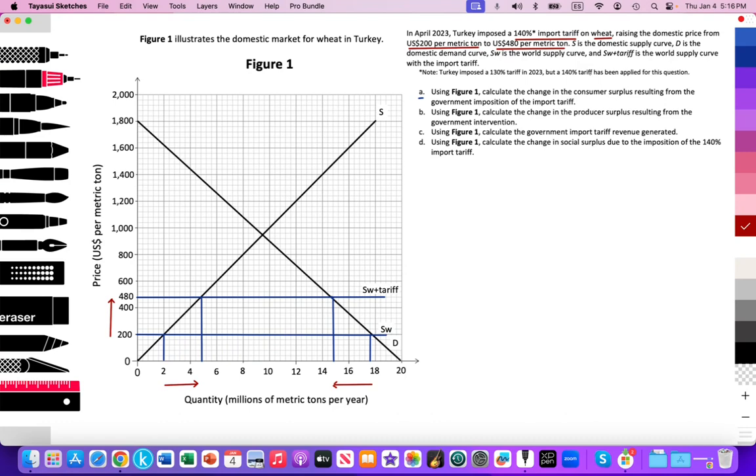The S curve is the domestic supply, the D curve is the domestic demand, then we have SW being the world supply curve, the global market setting that perfectly elastic price that all countries will accept, and then SW plus tariff, the world price plus the tariff imposed by Turkey. We have all the information to interpret this model.